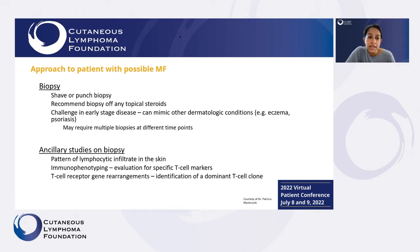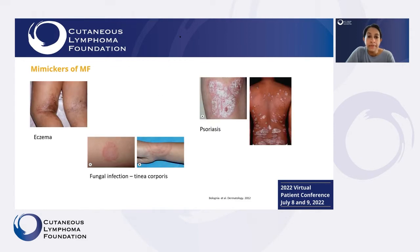When the biopsy is performed, pathologists are looking at how the lymphocytes look in the skin, looking for certain markers expressed by the T cells causing the lymphoma, and trying to see if the T cells seen in the skin are all the same by looking for T cell receptor gene rearrangements — which makes us think more that this is a type of lymphoma. There are other skin conditions that can mimic MF, such as eczema, psoriasis, and certain fungal infections, and we really value the input of our dermatology colleagues to help us differentiate between some of these.